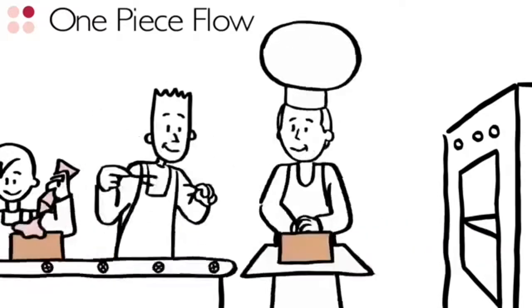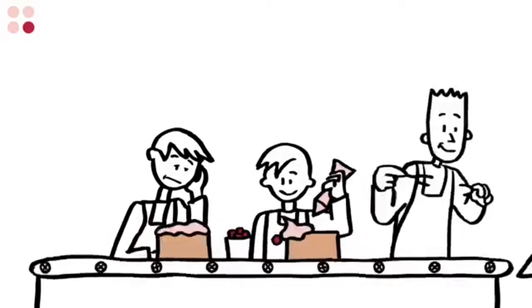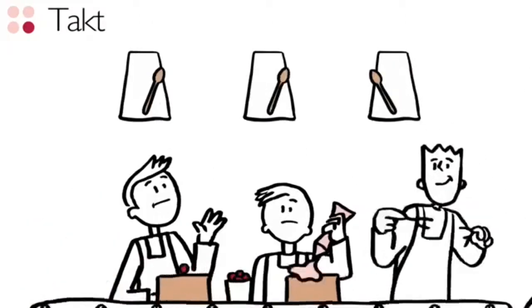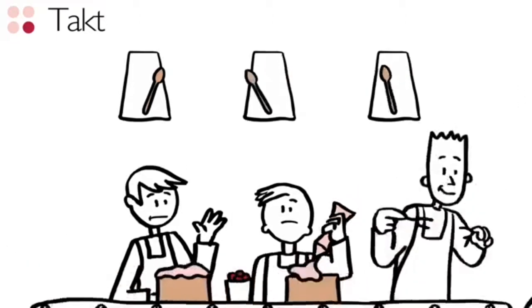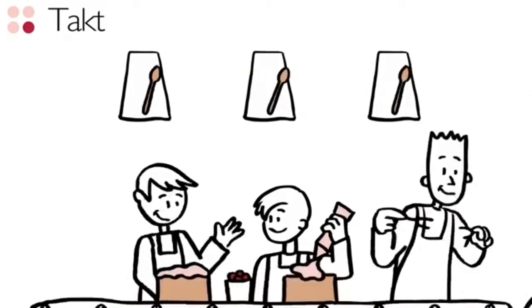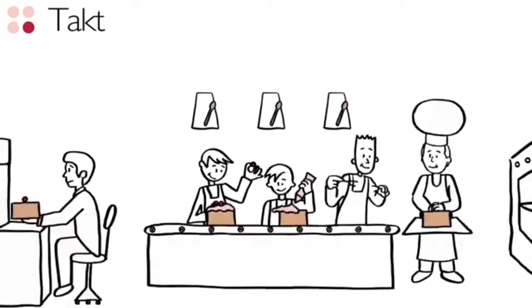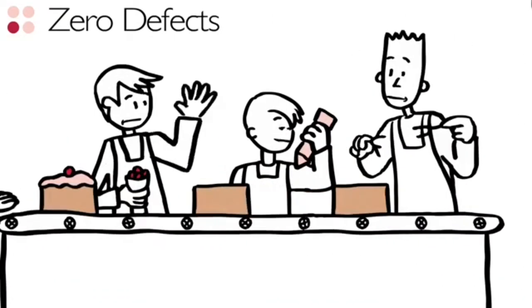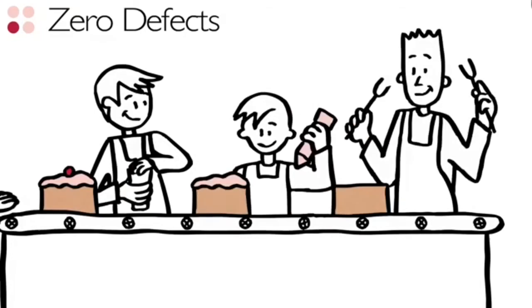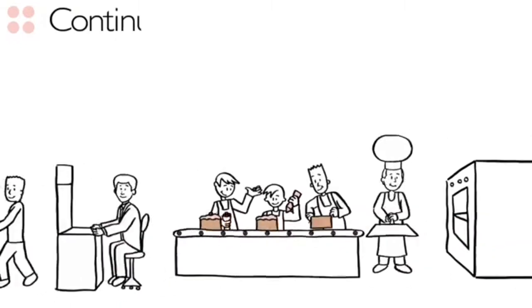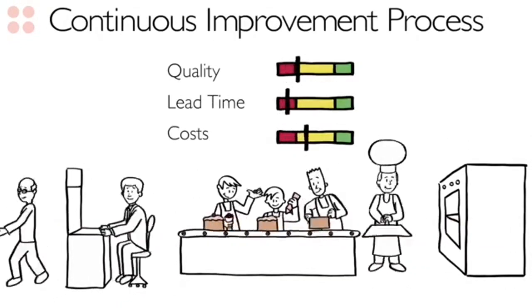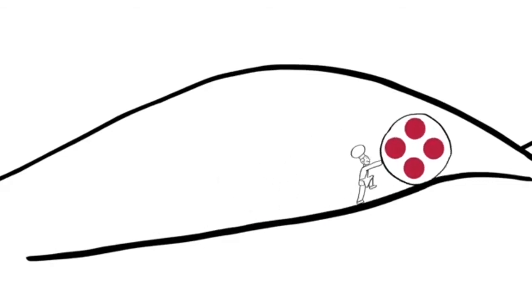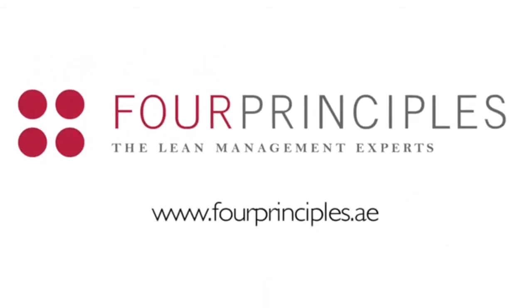The second principle is one-piece flow — focusing on one single piece at a time minimizes work in progress, process interruptions, lead time, and waiting time, while increasing quality and flexibility. The third is takt — the heartbeat of a lean system representing how fast you need to manufacture a product to meet customer demand, allowing you to balance work content, achieve continuous flow, and respond flexibly to marketplace changes. The fourth is zero defects — mistakes happen, but a lean company doesn't pass on defects; mistakes from previous steps must be fixed before moving on. Combined with continuous improvement, these four principles help companies stay ahead of the competition.